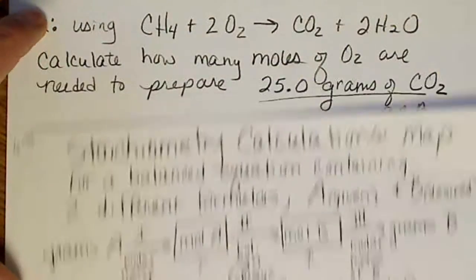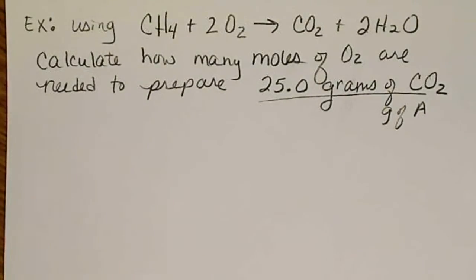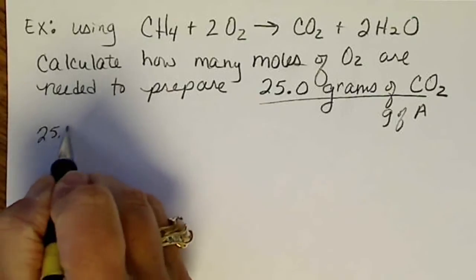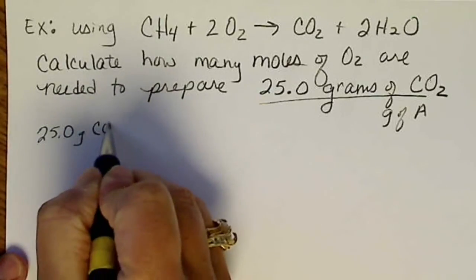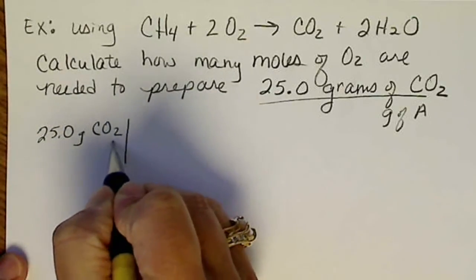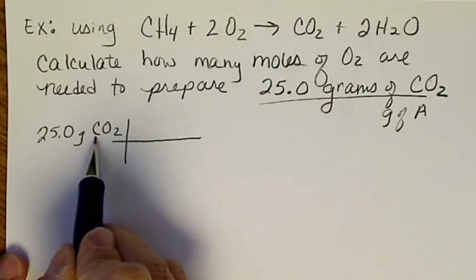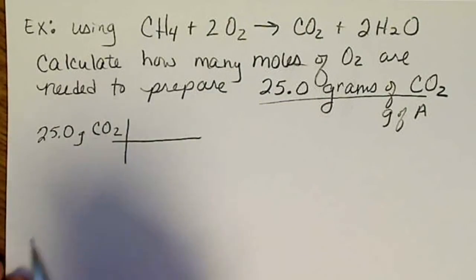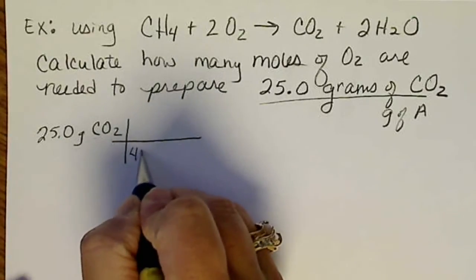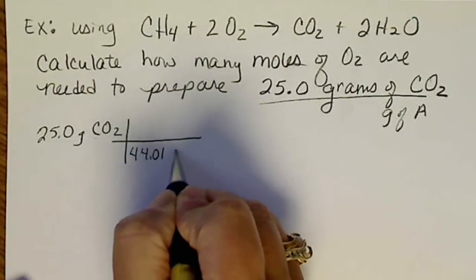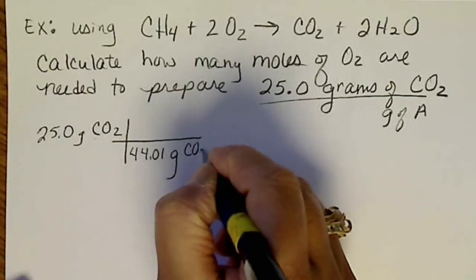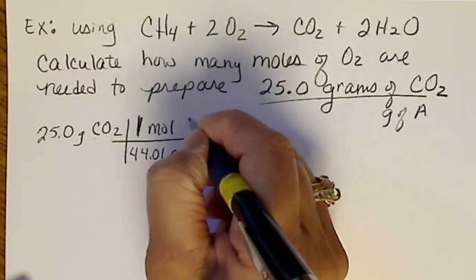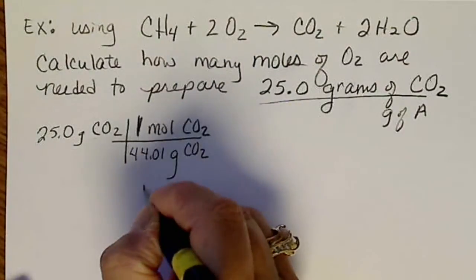So we'll just do those in two steps. We're going to start with what's given, 25.0 grams of CO2. We'll get out the periodic table and add one carbon, which weighs 12, to two oxygens. And each oxygen weighs 16. So this number will be 44.01 grams of CO2 per one mole of CO2. So this is step one.